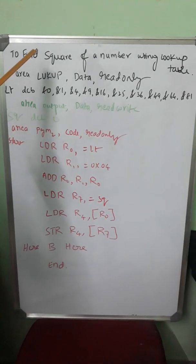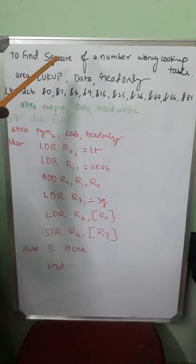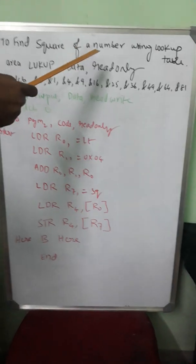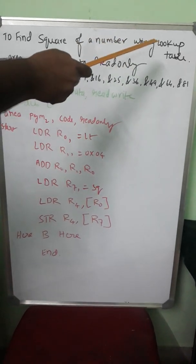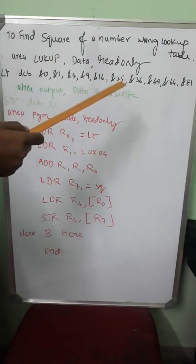Let me explain an ARM program to find the square of a number using a lookup table. What is a lookup table actually?